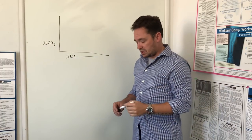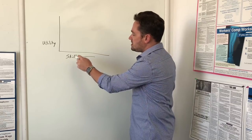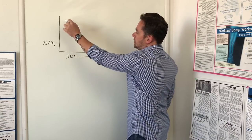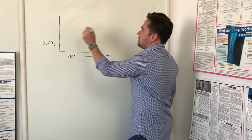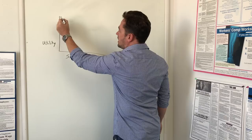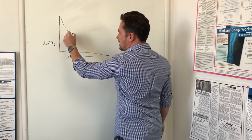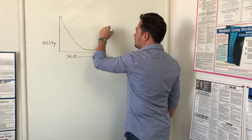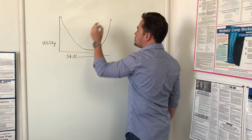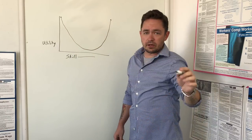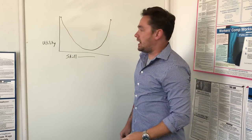A U-shaped utility curve means that as the skill of the shooter increases, revolvers become less useful and then more useful. So we start up here at a very unskilled shooter, and as they get more and more skilled, the usefulness changes and it goes along this utility curve. Now we're going to explain exactly what I mean by that.